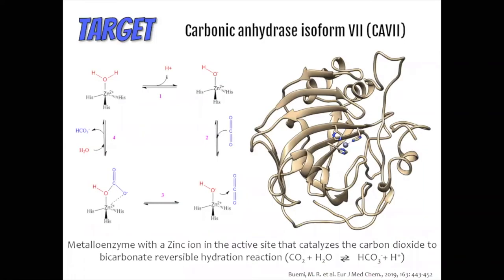There are 15 catalytic isoforms in humans. CA7 is a cytosolic metalloenzyme that catalyses the carbon dioxide to bicarbonate reaction. This enzyme has a zinc ion in the active site that is essential for its catalytic action.